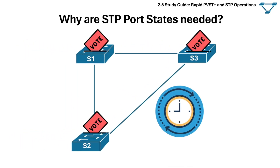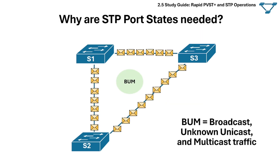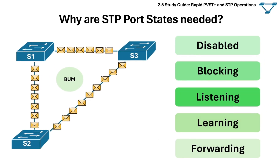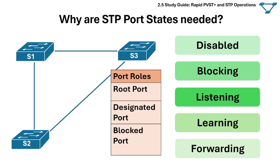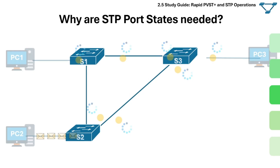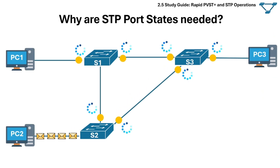Why are STP port states needed? It takes time to elect a root bridge and complete the STP process. While switches are figuring out the STP topology, broadcast, unknown unicast, and multicast traffic can loop around in the meantime and cause devices to crash, leading to cycles of instability. STP uses port states to help prevent network loops while the protocol builds the loop-free topology, safely transitioning each port into its determined STP role. When switches are powered on, ports move through several passive states while the STP topology is determined, so no temporary broadcast loops occur.